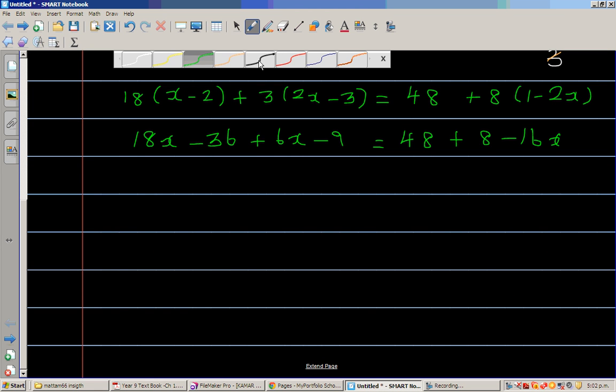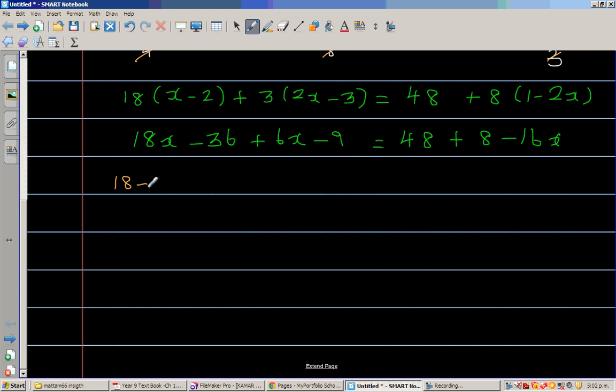Let's simplify the left hand side. So let me write this as 18x plus 6x minus 36 minus 9 is equal to 48. Let's simplify the right hand side. So 48 plus 8 is 56 minus 16x. So this is 18x plus 6x is 24x minus 45 is equal to 56 minus 16x.